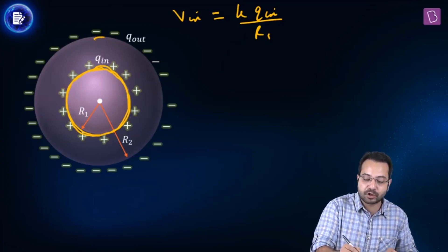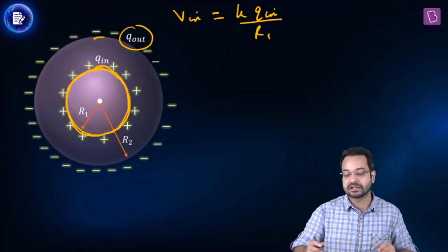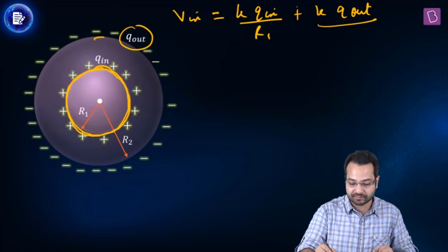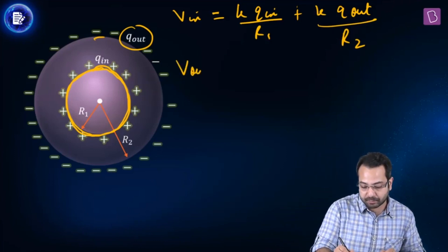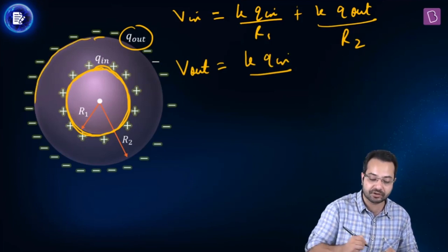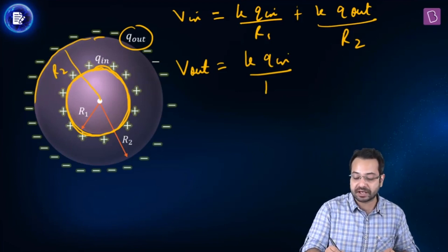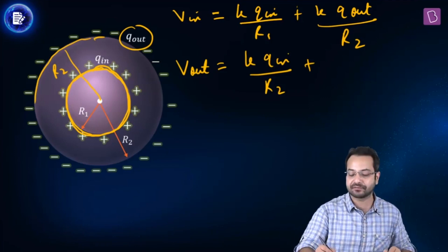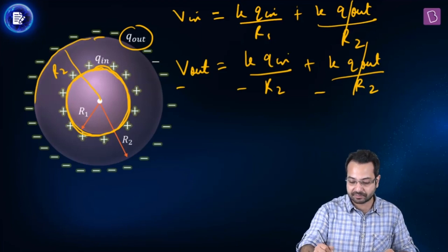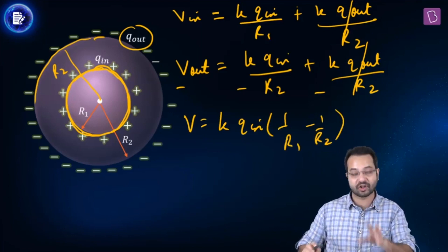Due to this charge distributed on the outside, for any spherical charge distribution at any internal point, the potential is given by KQ upon the radius — equal to the surface potential of the sphere. So this becomes KQ_out upon R2. The potential of the outer sphere is KQ_in upon R2 plus KQ_out upon R2. Now if we find V_in minus V_out, the KQ_out/R2 terms cancel and the potential difference becomes K into Q_inside into (1/R1 minus 1/R2). This is how the result was derived.